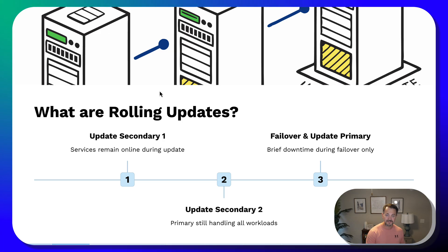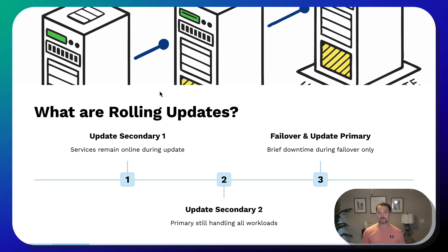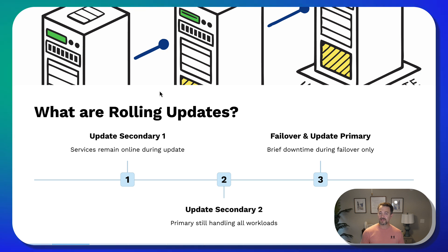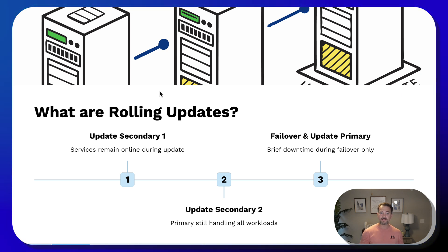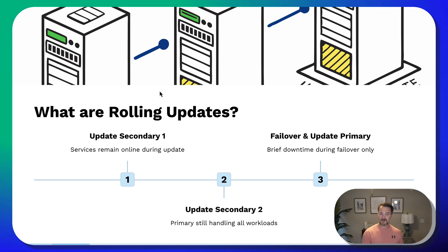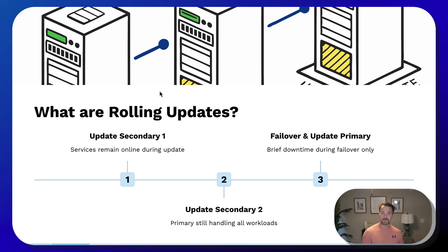Some other things to keep in mind: re-enable monitoring. If you've disabled monitoring for this AG during the maintenance window, go ahead and turn that back on, and then let your users know that maintenance is complete so they can get in and start testing. This process is highly dependent on how your AG has been configured, but generally these are the 10 steps of a rolling update.